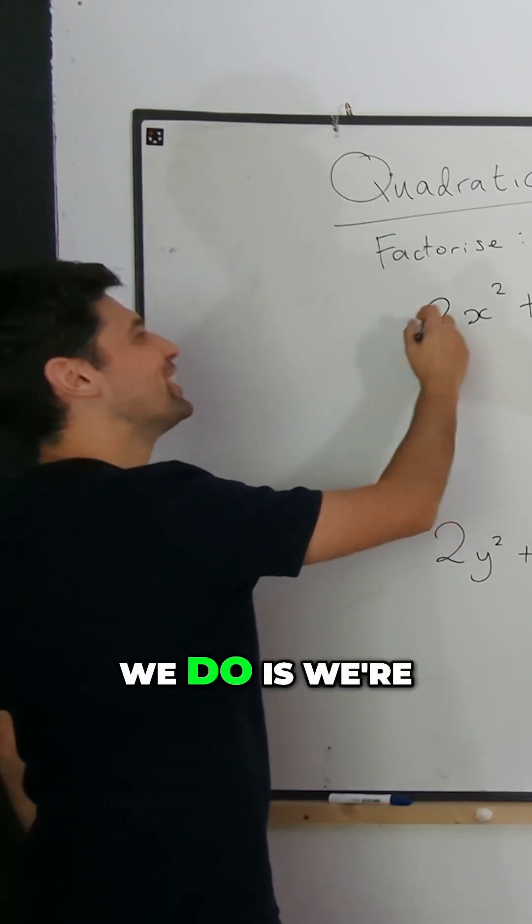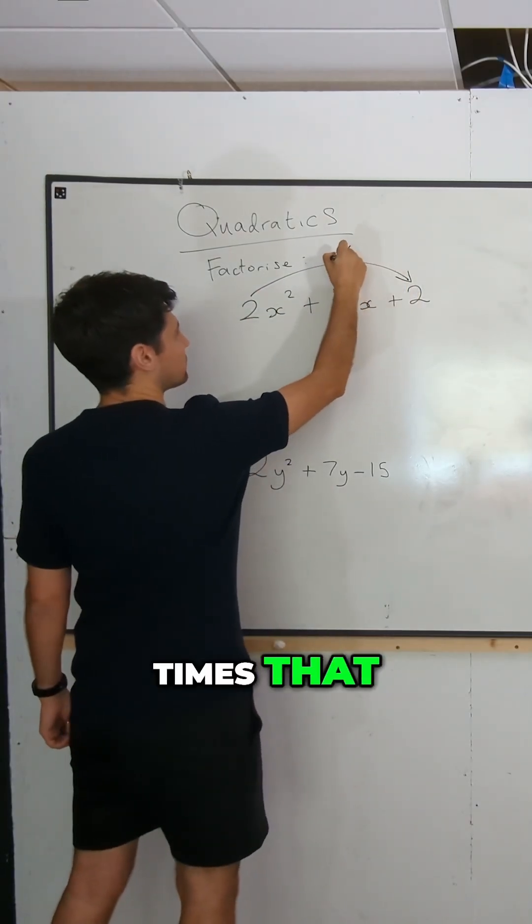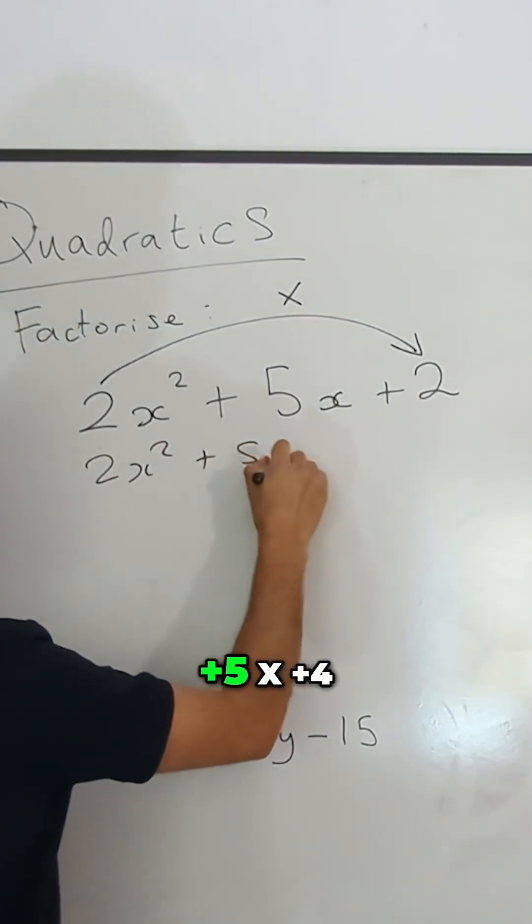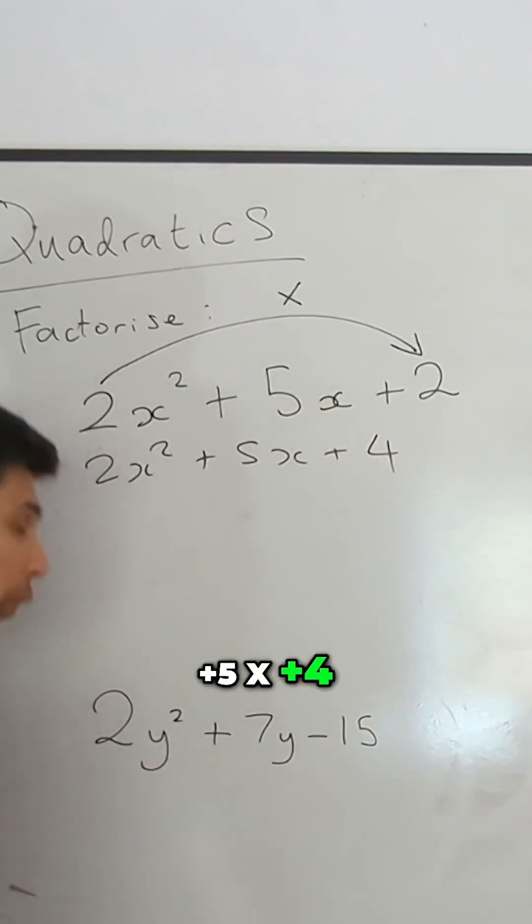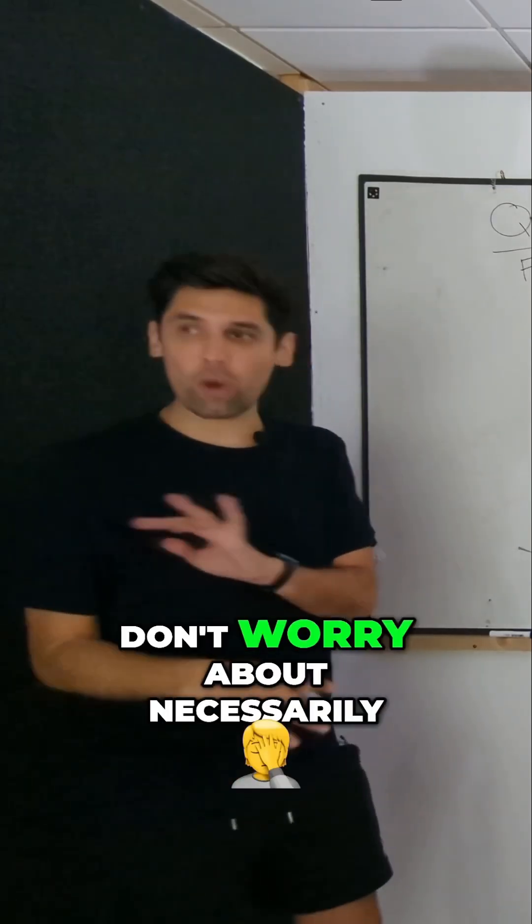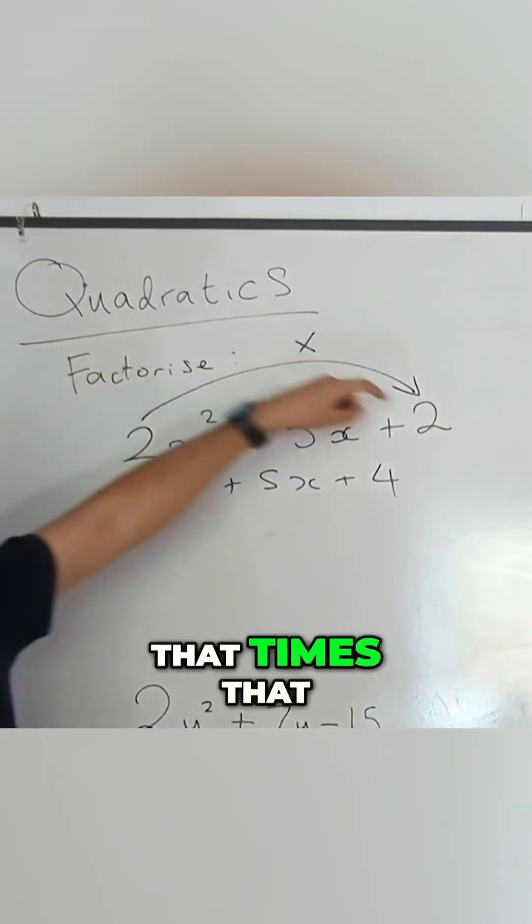So the first thing we do is we're going to do this times that, and we're going to write it out again as 2x squared plus 5x plus 4. From this point on, this is just a little trick. So that times that, write it out again, and then we do like we normally do.